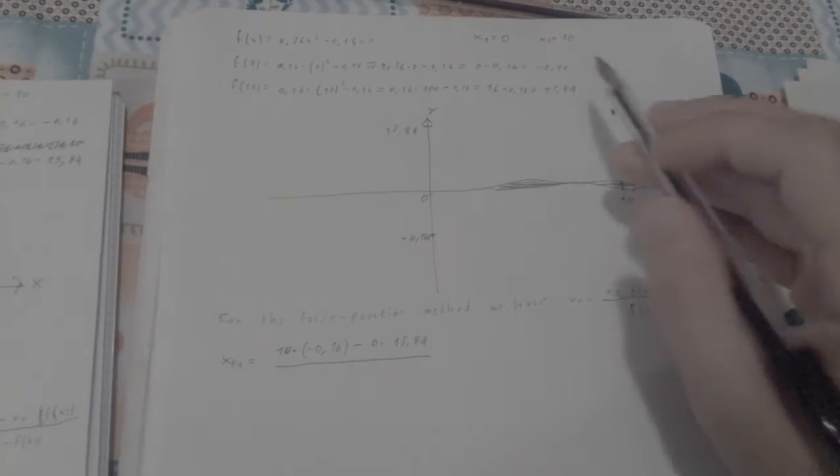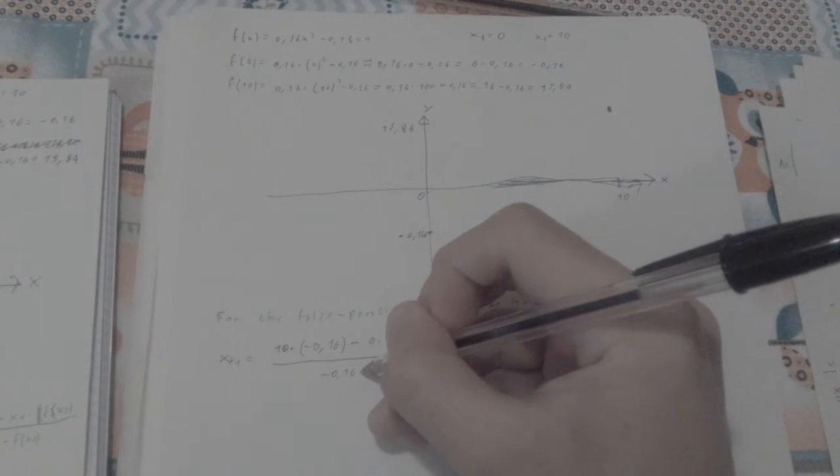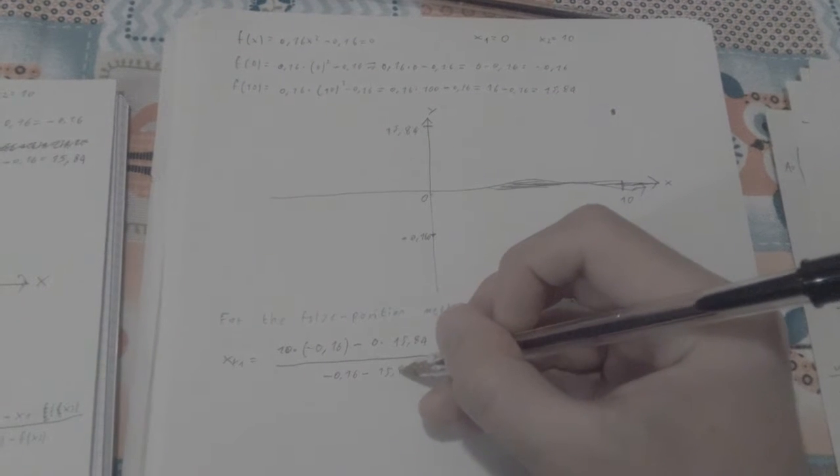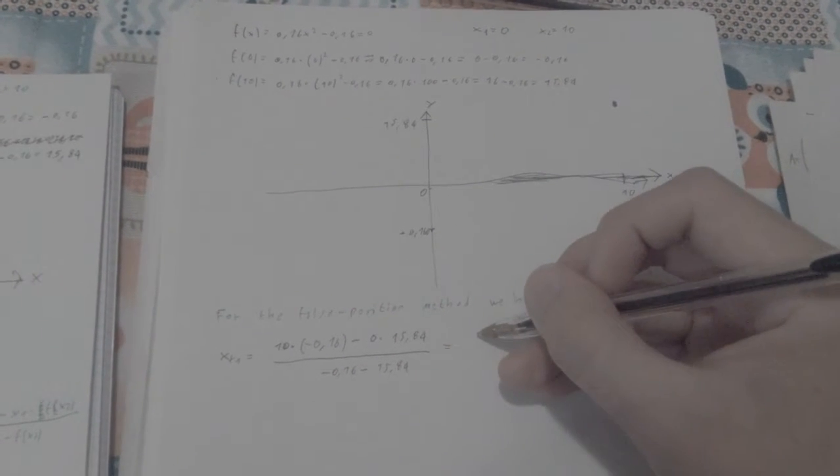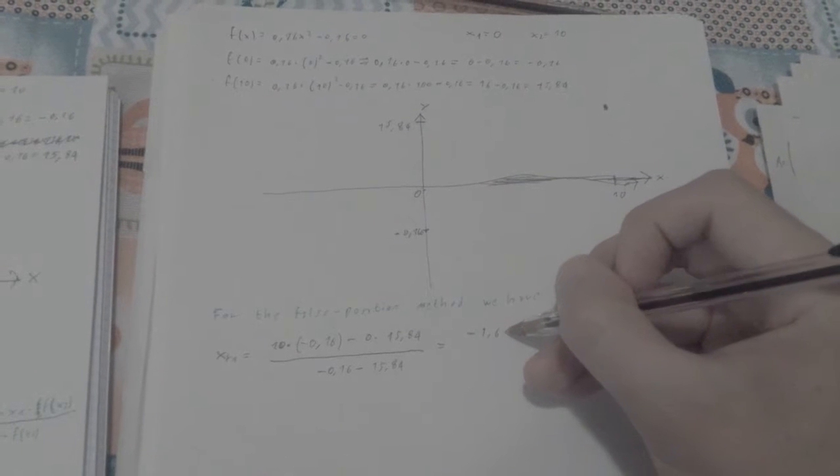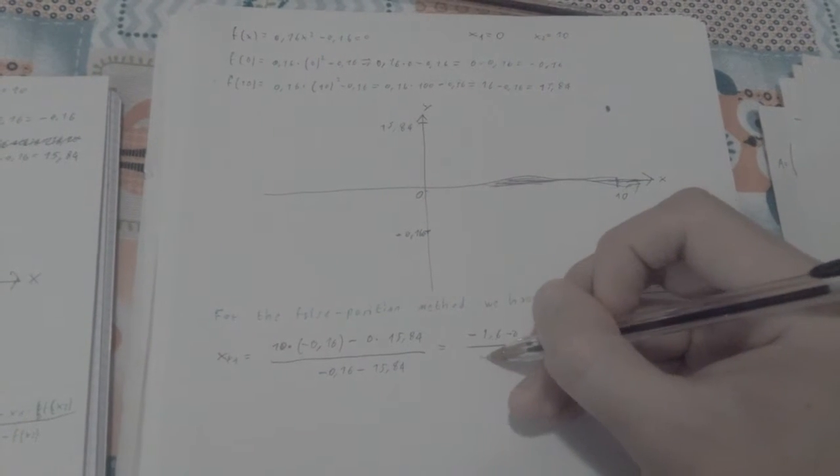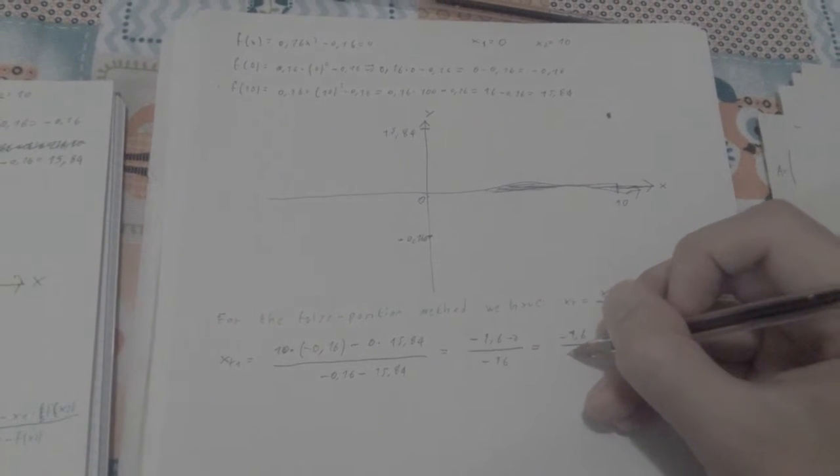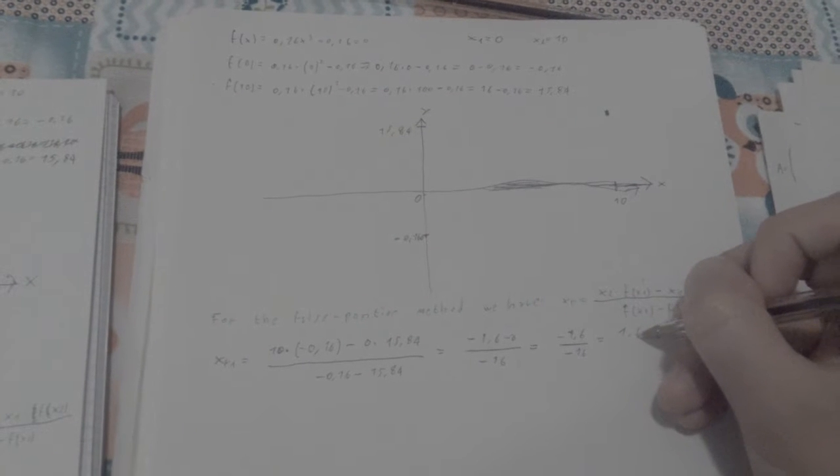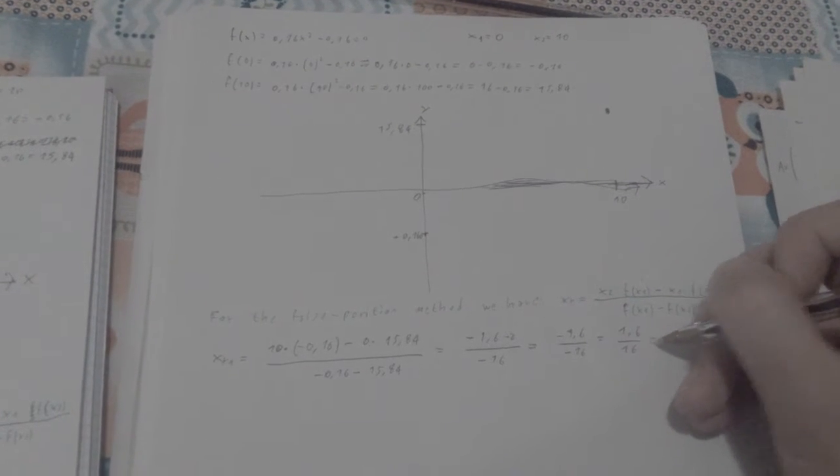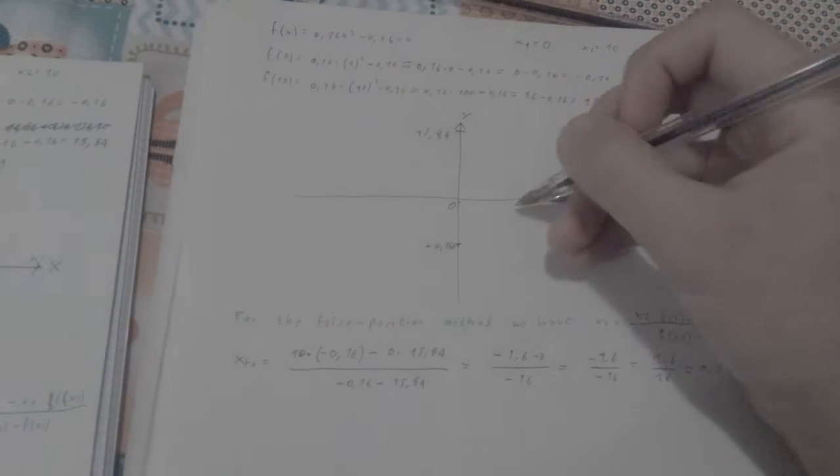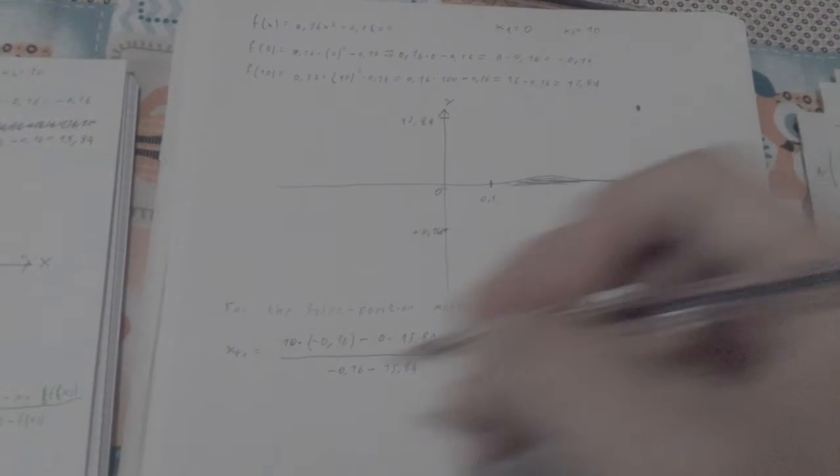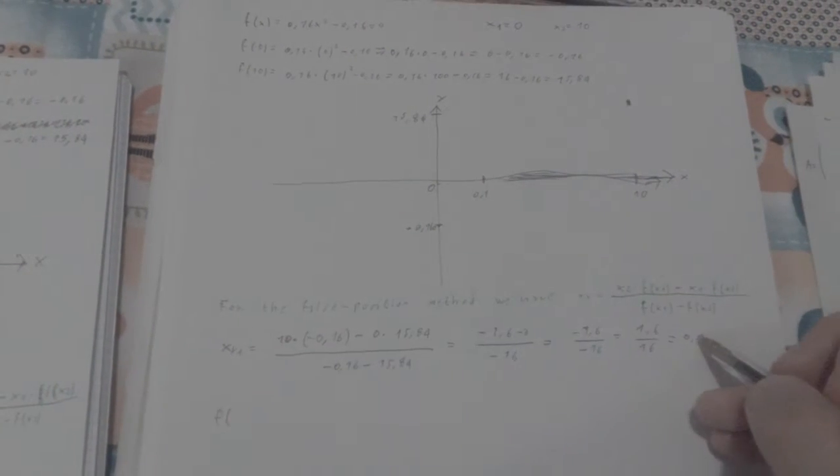Everything over f(x1) minus f(x2), which is negative 0.16 minus 15.84, which gives me 0.1. So my point is going to be 0.1.